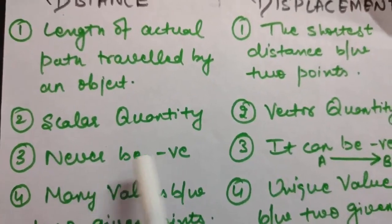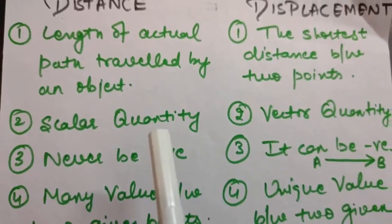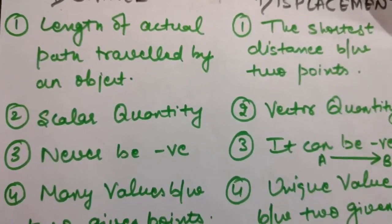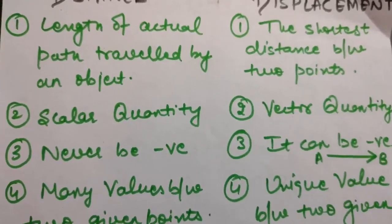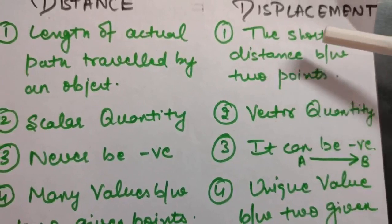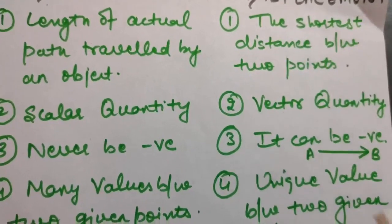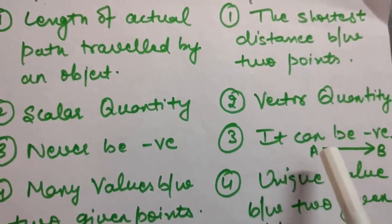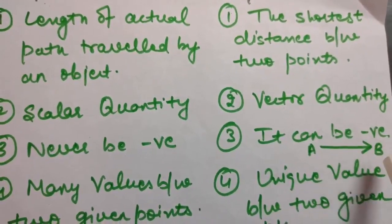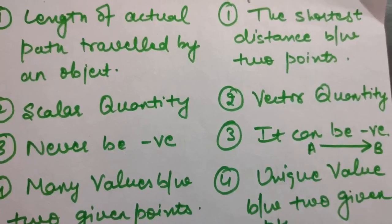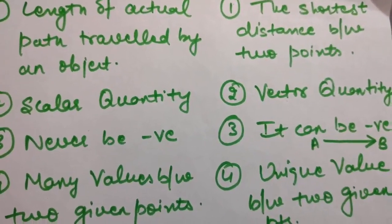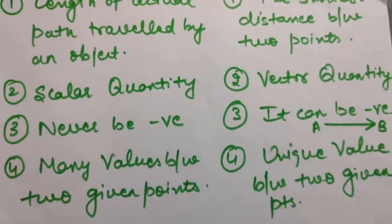Distance can never be negative - it is always positive or zero if we are at rest. But because displacement includes direction, it can be negative. For example, if we suppose the direction from A to B is positive, then someone coming from B to A will have negative displacement because they are moving in the opposite direction.